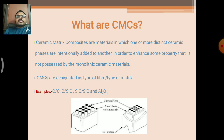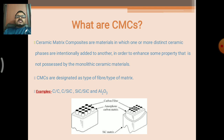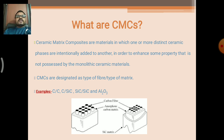So, what are these ceramic matrix composites? Ceramic matrix composites are materials in which one or more ceramic phases are intentionally added to another, in order to extract some properties from two different distinct materials by combining them. These ceramic matrix composites are designated based on fibers and type of matrix. There are different types of fibers such as glass fiber and aramid fiber, and based on size there are short fibers, long fibers, chopped fibers, and fillers.